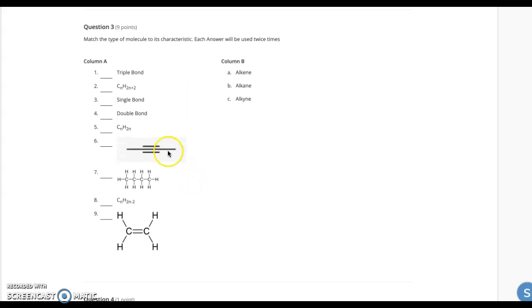Okay, similarly here, a triple bond tells me that this one is an alkyne. All single bonds tells me this one is an alkane. And a double bond tells me that one's an alkene. And then that's the same. Triple bond, alkyne. Single bond, alkane. Double bond, alkene.